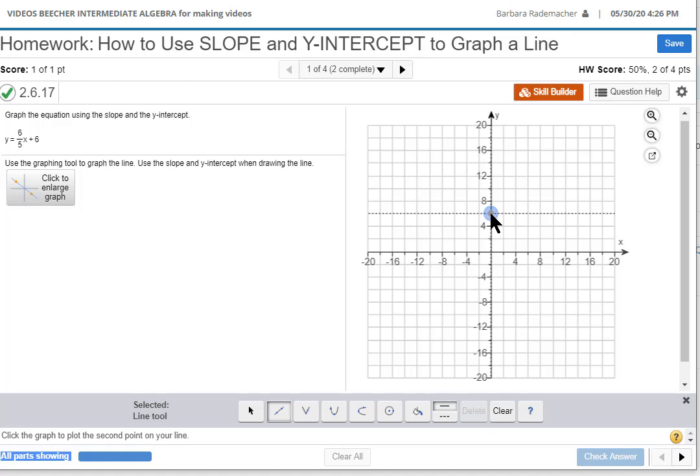Then from there I go up 6 units: 1, 2, 3, 4, 5, 6, and then I don't click, do not click, not yet. Instead, just hold it there because you're going to go to the right 5: 1, 2, 3, 4, 5. Now you click.